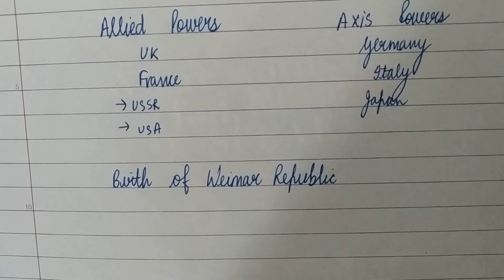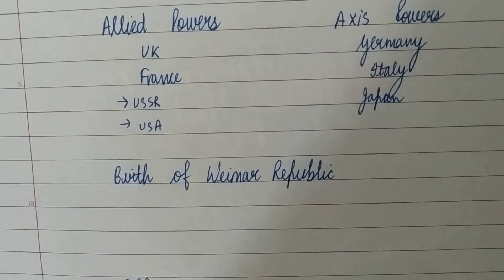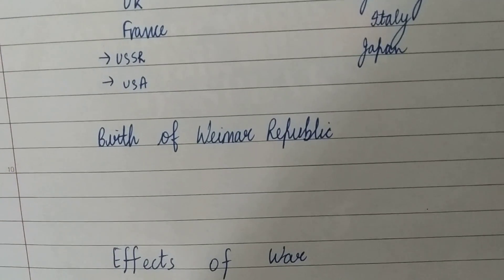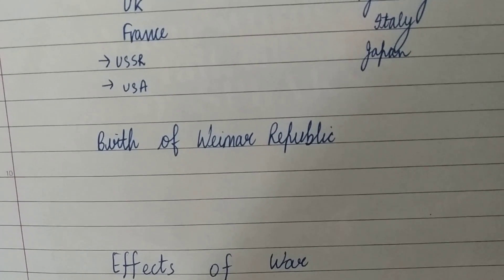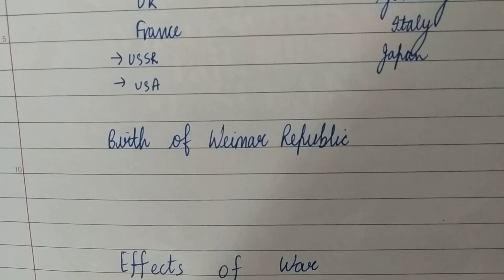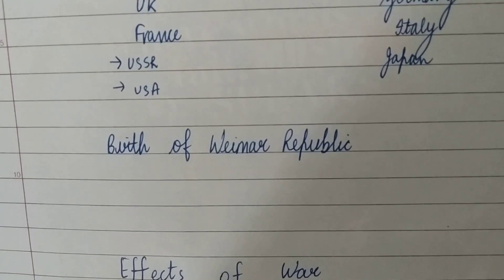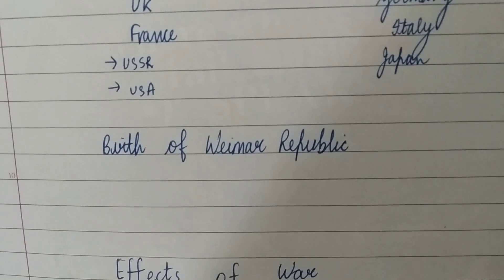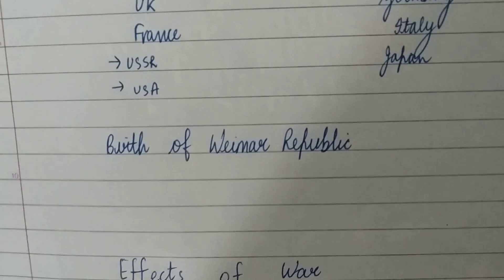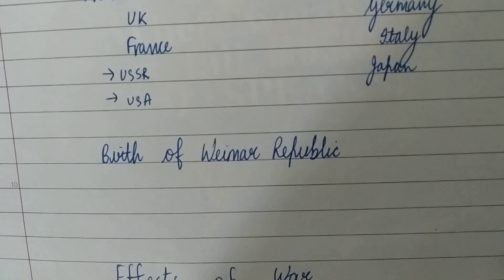Then came the birth of the Weimar Republic. Germany had fought the First World War against the Austrian Empire and against the Allies — England, France, and Russia. A national assembly met at Weimar — Weimar is the name of a place — and they established a democratic constitution with a federal structure. Deputies were elected to that parliament.